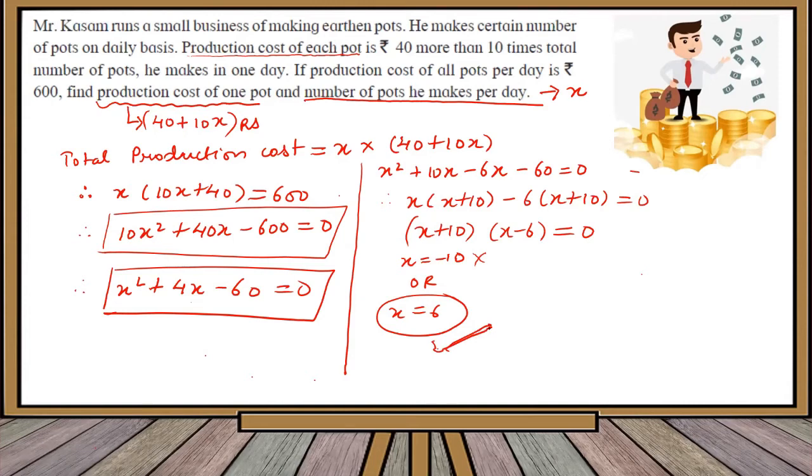So what value do we take? We will take x = 6. Hence, the total number of pots made per day will be equal to 6.